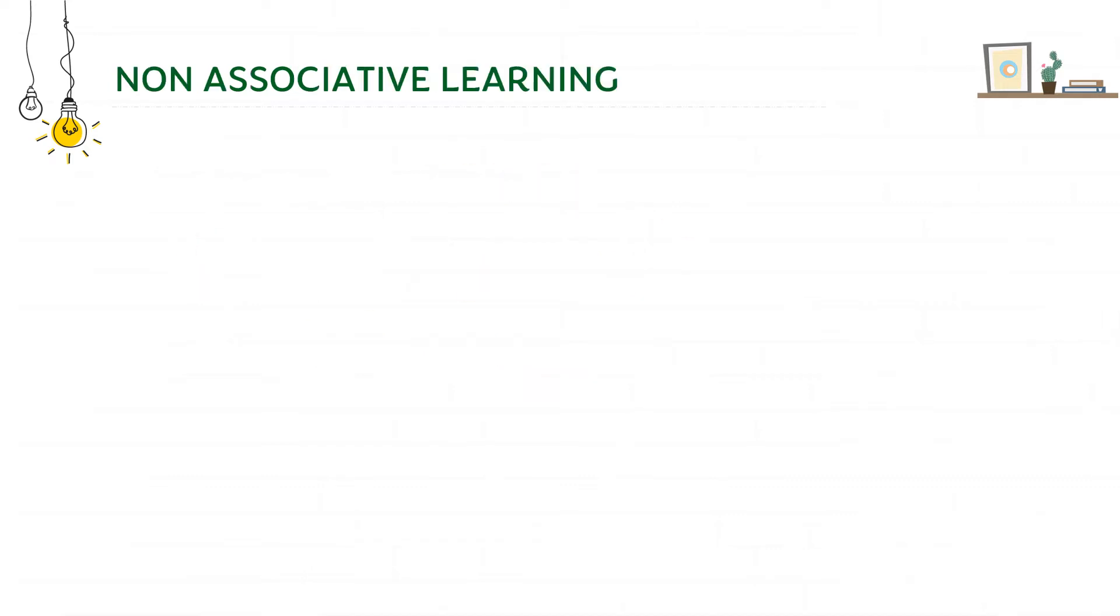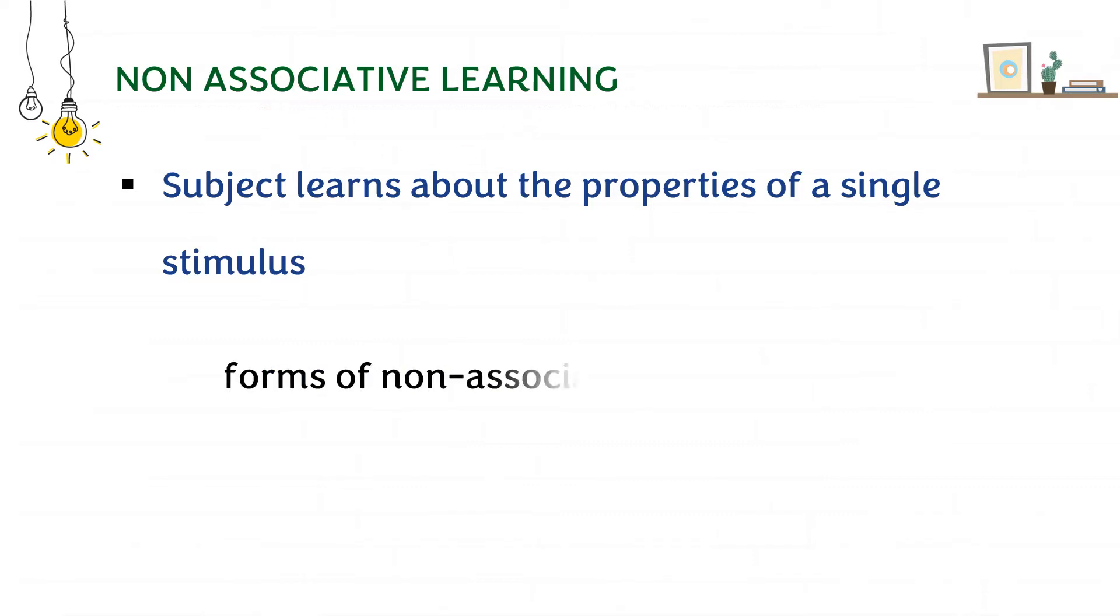So what is non-associative learning? In non-associative learning, the subject learns about the property of a single stimulus. The subject will learn how to approach a single stimulus. That is why it is called non-associative learning. And the two forms of non-associative learning are habituation as well as sensitization.